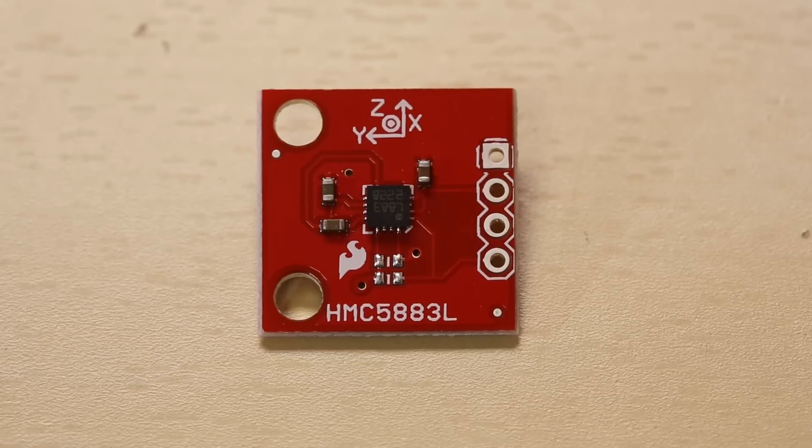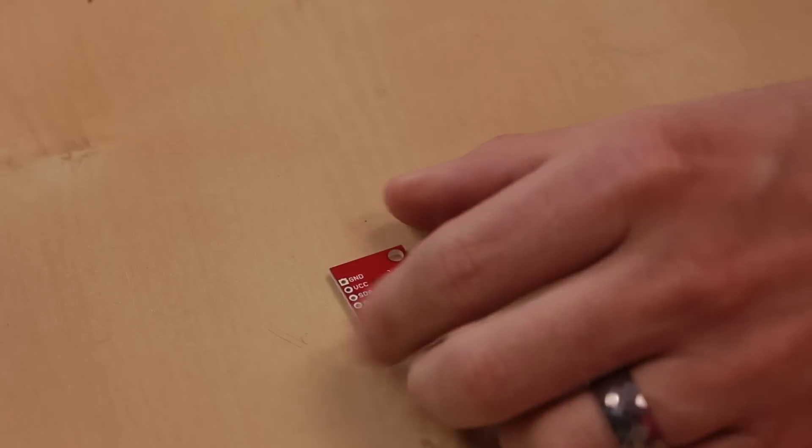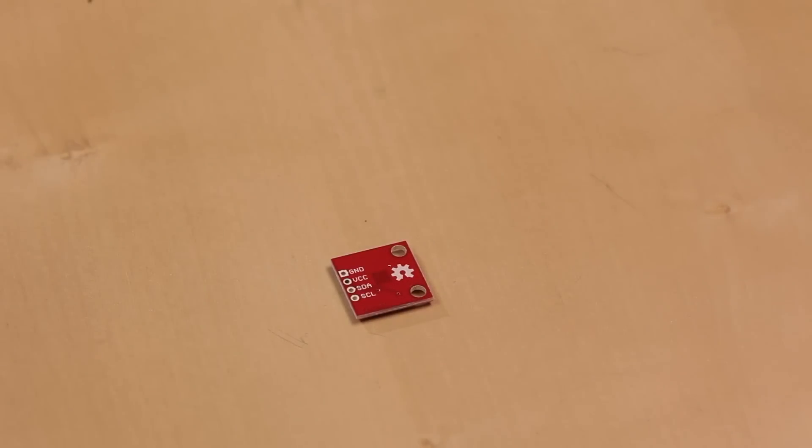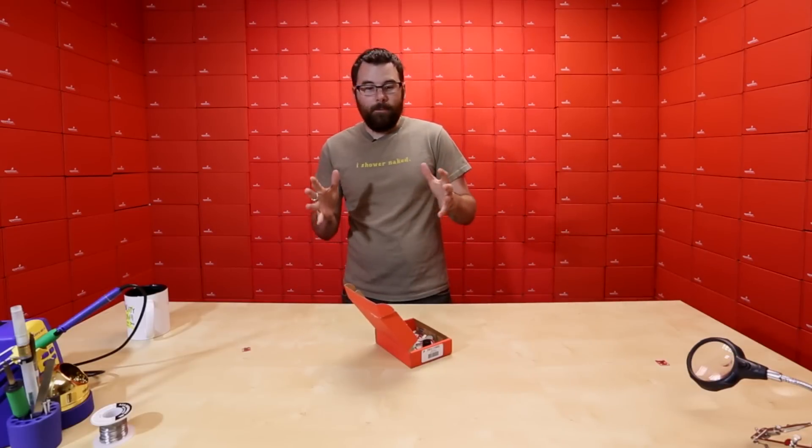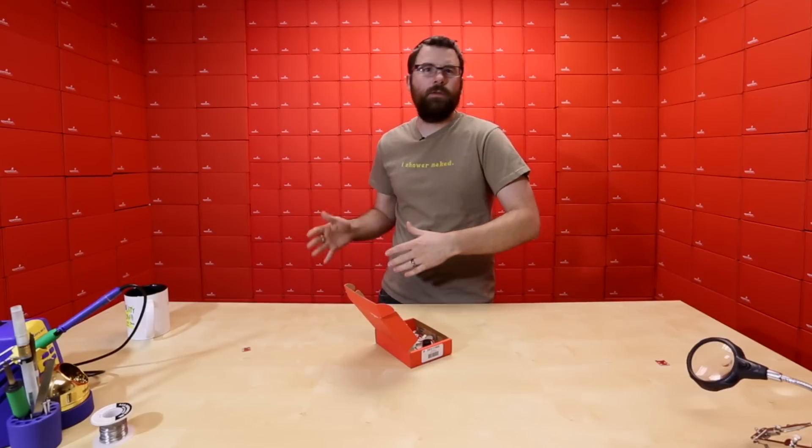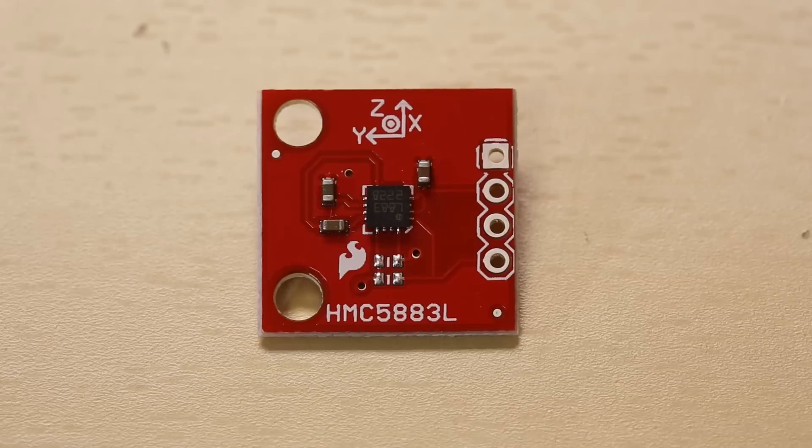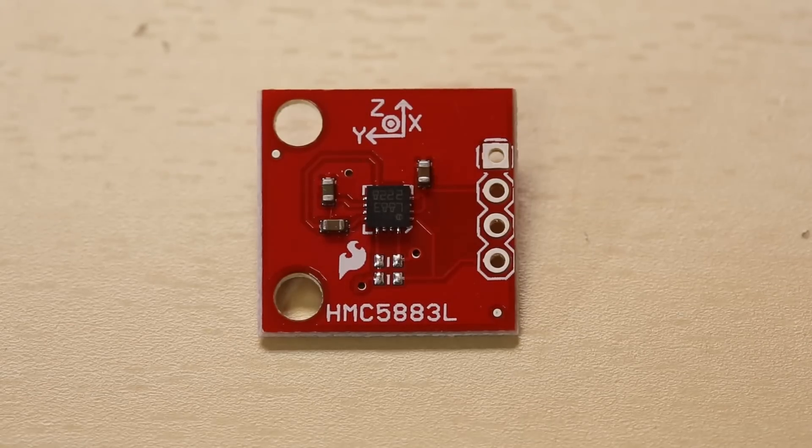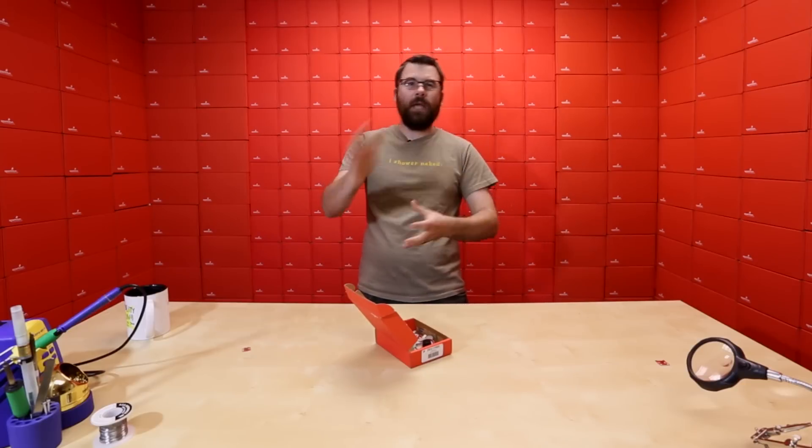This is the HMC5883L. This is a magnetometer breakout, and it has a very simple I2C interface as well. A magnetometer allows you to basically detect and determine your orientation. It doesn't tell you how you're moving, it just tells if you're pointing north, south, east or west, or any different directions. And because this is a triple axis, it can tell you all three axes. So not just north, south, east, west, but up, down, and all that stuff.